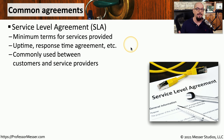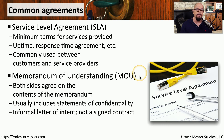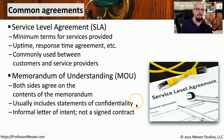These are common contracts with service providers so everyone understands the minimum service level and what happens if that level isn't met. For agreements with a third party that don't require a full-blown contract, you may use a memorandum of understanding, or MOU — a memo sent between two parties so they understand the requirements for a particular business process. This is an informal letter of intent that may not have the binding qualities of a contract, but informs both sides of expectations.